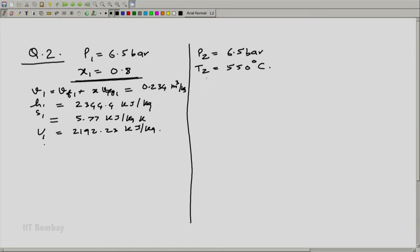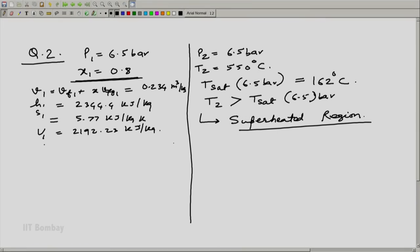At state 2, we know that T sat at 6.5 bar is around 162 degree centigrade, approximately that is what we found. Therefore we know that our T2 is more than T sat at 6.5 bar and therefore this is in superheated region. Therefore I can get the values of superheated region from now table 3.